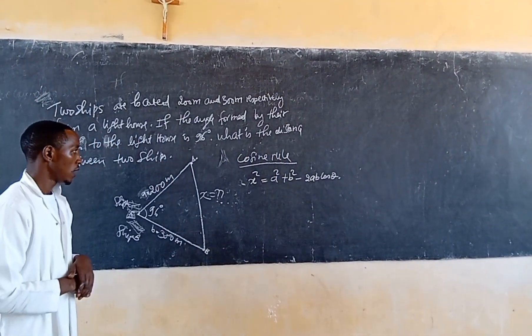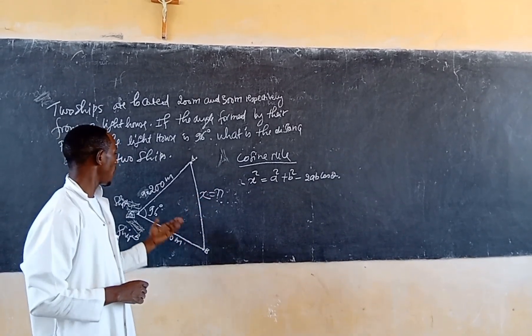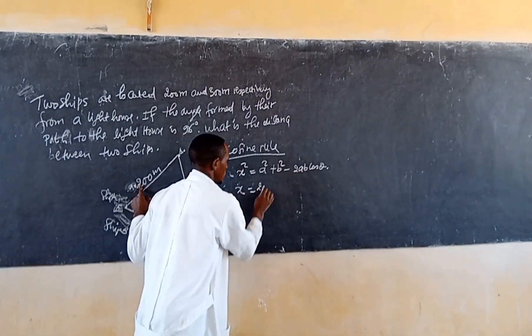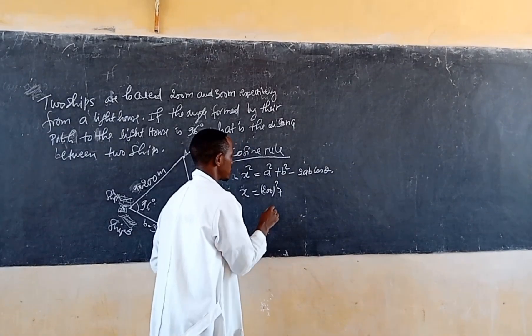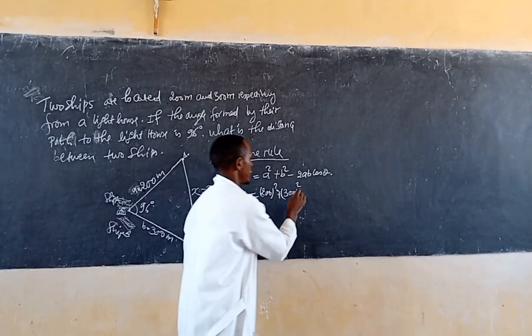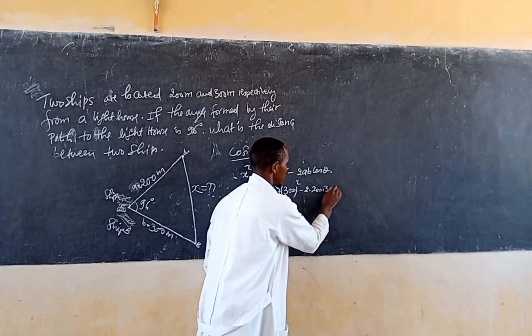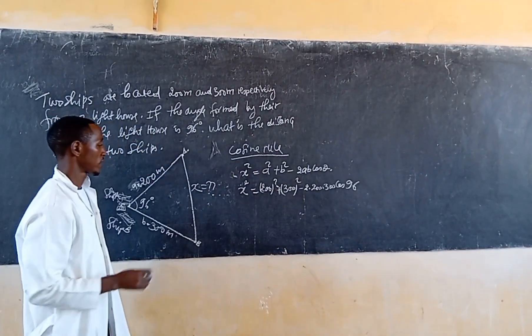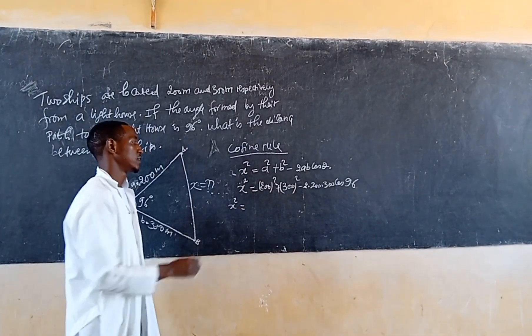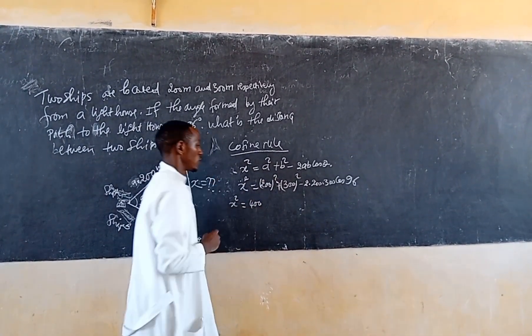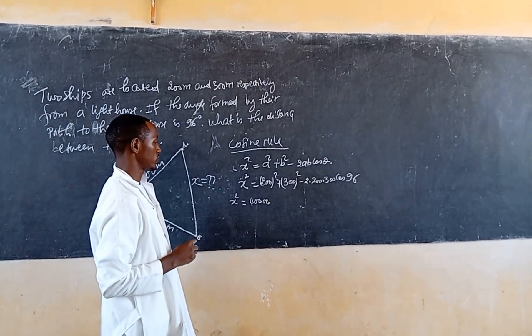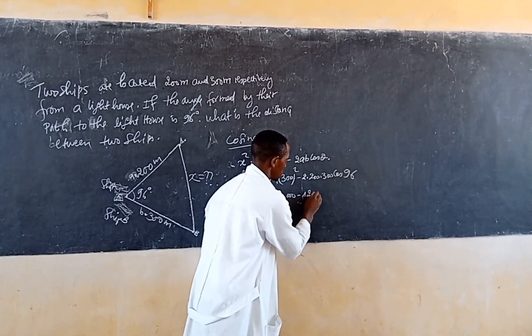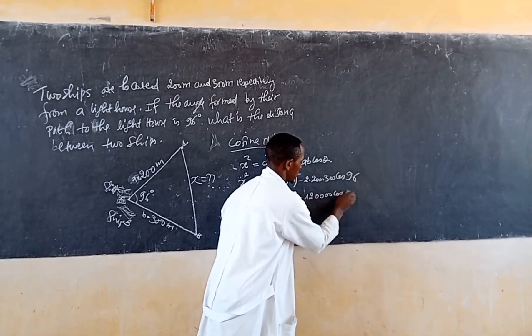The cosine rule is x squared equals A squared plus B squared minus 2AB cosine. So now we have x squared equals 200 power 2, plus 300 power 2, minus 2 times 200, times 300, cosine of 96. So we have x square.